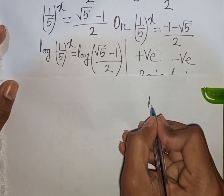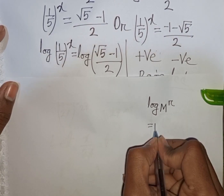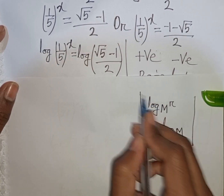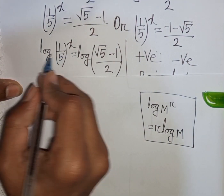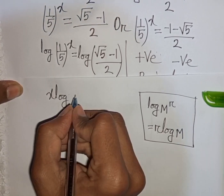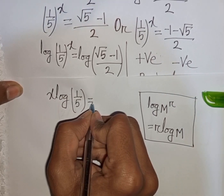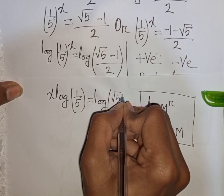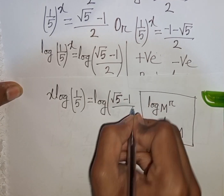We apply the rule that log m power r equals r times log m, so the power x moves to the base. This gives x times log(1 over 5) equals log of (square root of 5 minus 1) over 2.